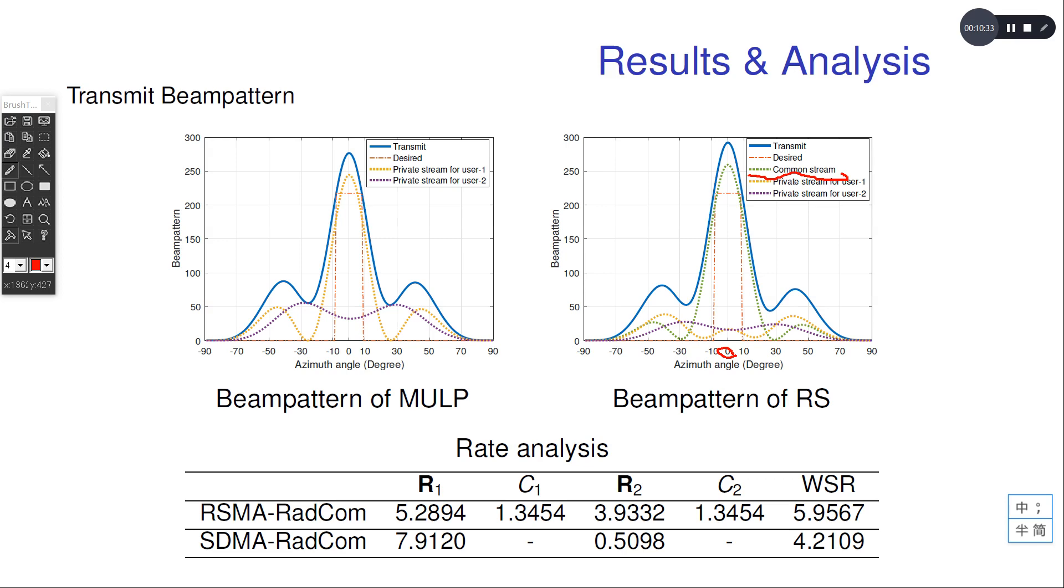As a result, the interference caused by the conflict of the radar and communication task can be mitigated by the common stream enabled by RSMA.